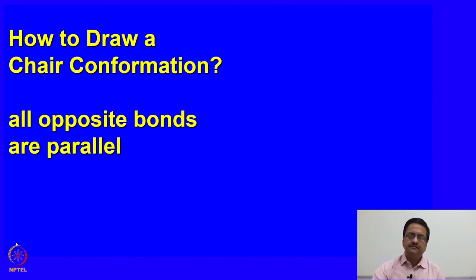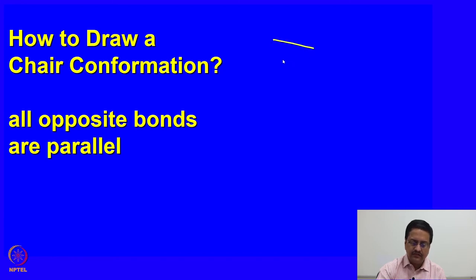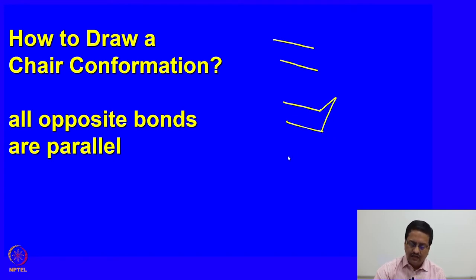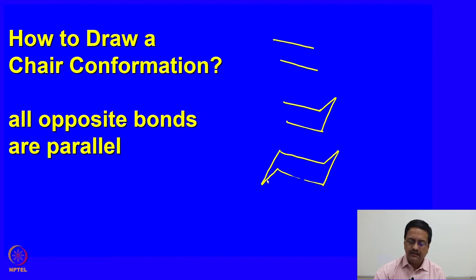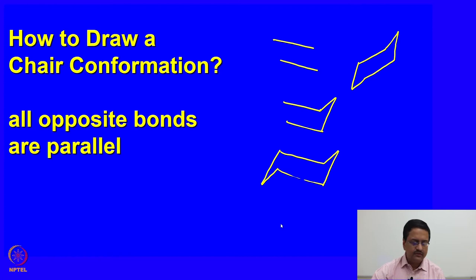By now you must have practiced how to draw different cyclohexane chair conformations. It is easy — if you try to draw the chair conformer, you should draw two parallel lines, then join those two parallel lines and further join the other two. Similarly, if you draw it in the other direction, both of them are the chair conformations of cyclohexane.